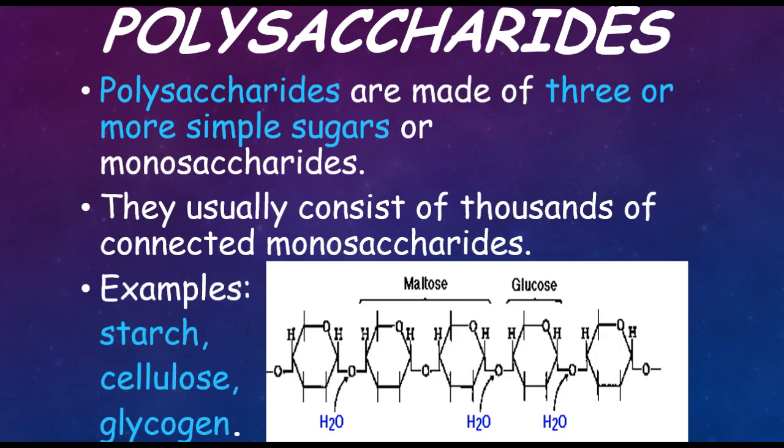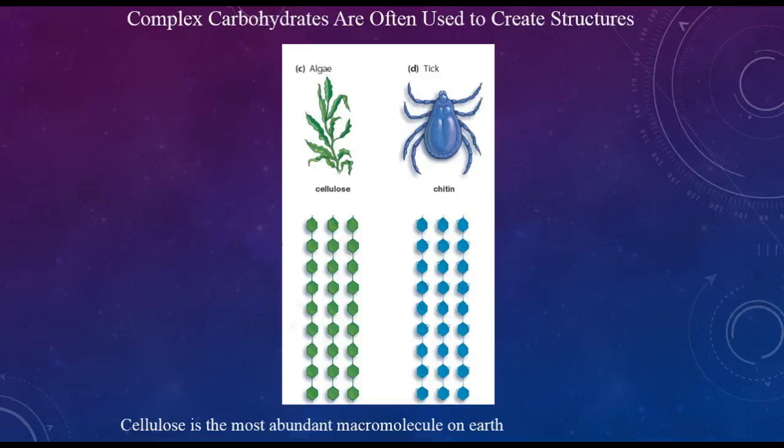Some examples of polysaccharides are starches, cellulose, and glycogen. Polysaccharides are also called complex carbohydrates and are often used to create structures. If you take a look at the picture, plants tend to have cellulose, which is the most abundant macromolecule on Earth.